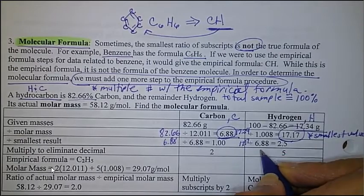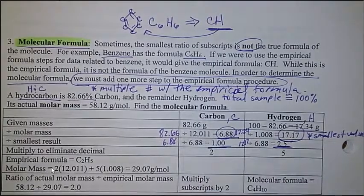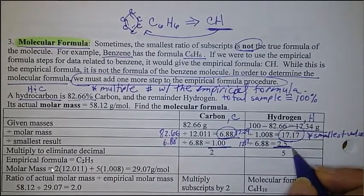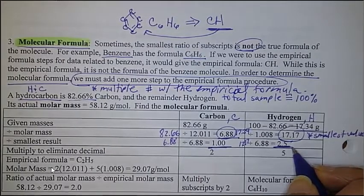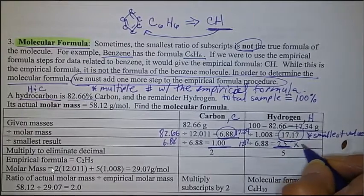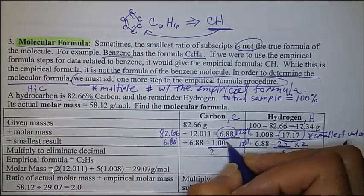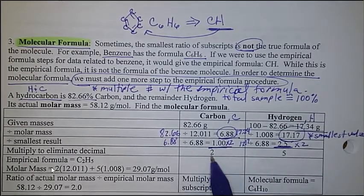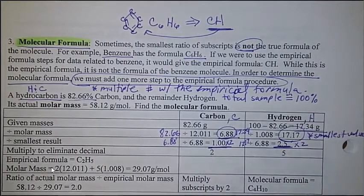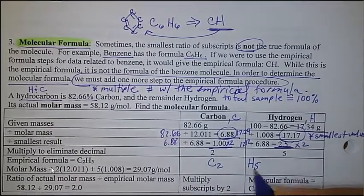And 17.17 divided by 6.88 gives you about 2.5. Since that's a decimal, we want whole number subscripts, so we multiply both sides by 2. That gives us 2 carbon atoms and 5 hydrogen atoms. So this is your empirical formula: C2H5.